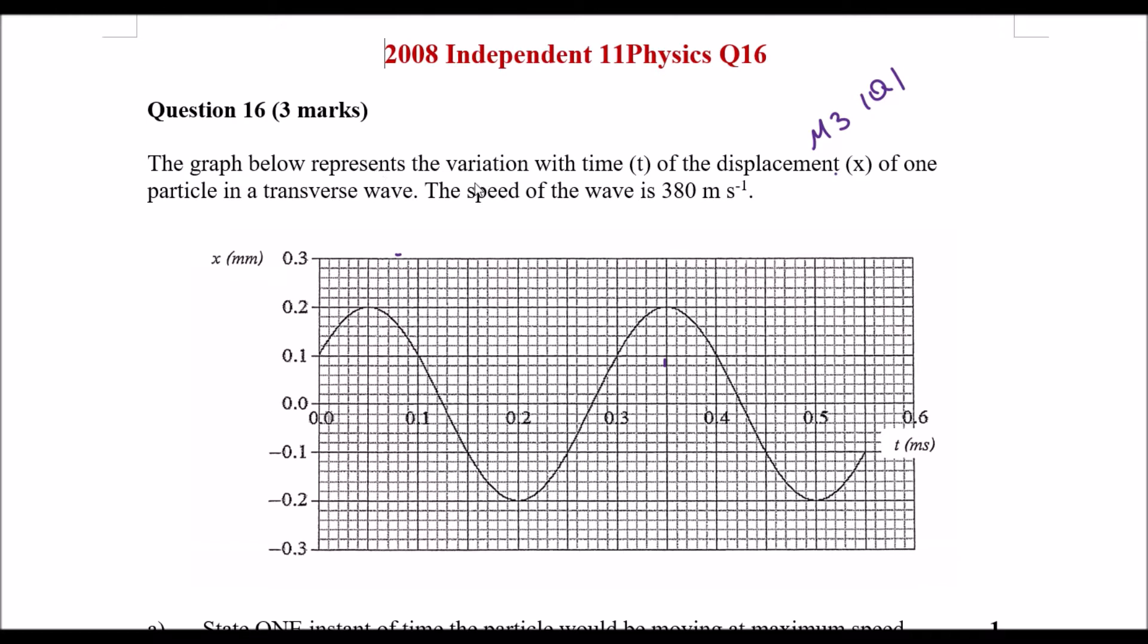In this graph we have here, it represents a variation with time and displacement as you can see. So one of the particles in a transverse wave. The speed of the wave is shown below, so you can see this is the amount of displacement the particle has with respect to time.